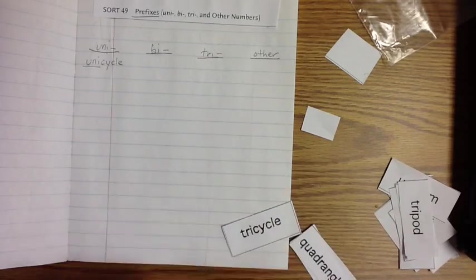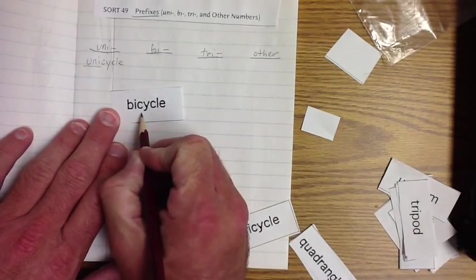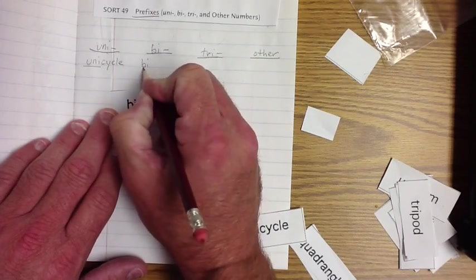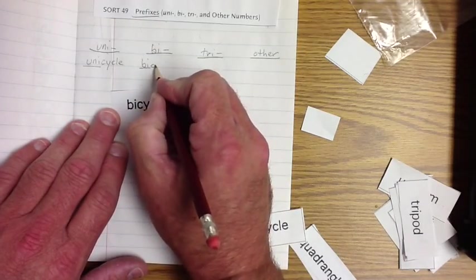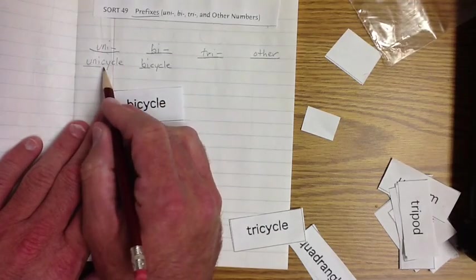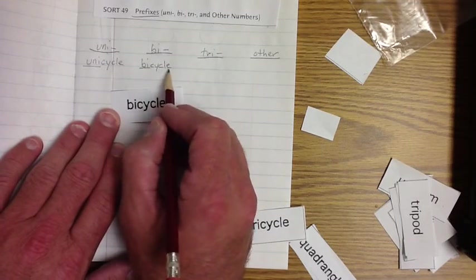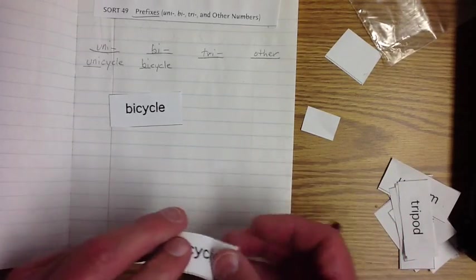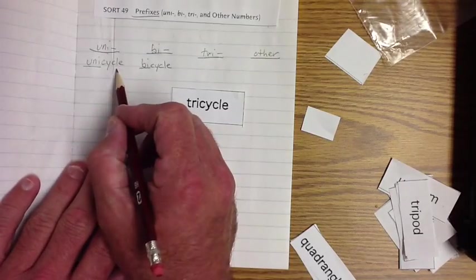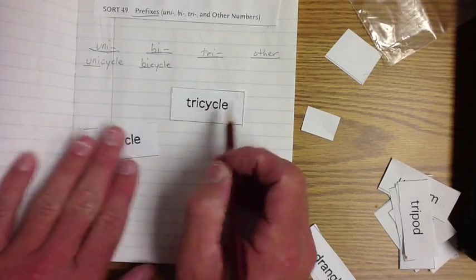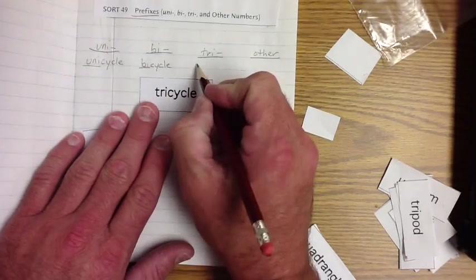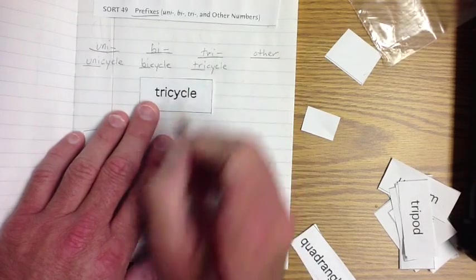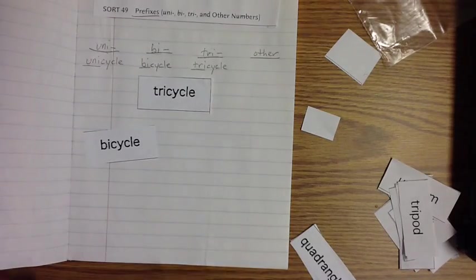Unicycle. Let's look at this other one right here. We got a bicycle or a bicycle. Bi, underline it, C-Y-C-L-E. Unicycle, bicycle, cycle. And then, or a unicycle. I wonder if that's a sickle or a cycle. I don't know. Let's do tri, tri, tri, sickle or tricycle.